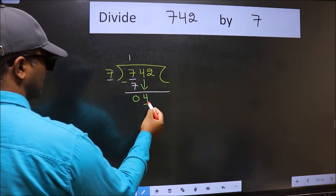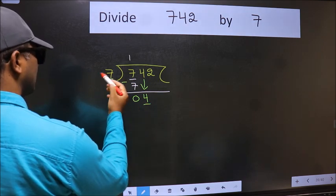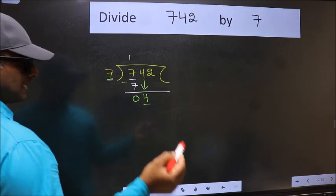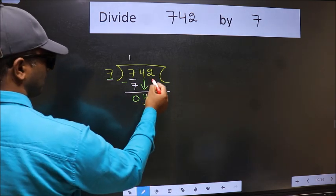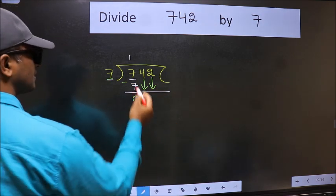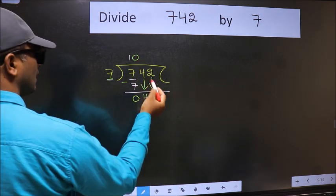Now here we have 4 and here 7. 4 is smaller than 7, so we should bring down the second number. And the rule to bring down the second number is we should put zero here. Then only we can bring this number down.